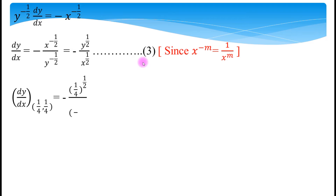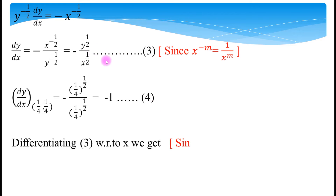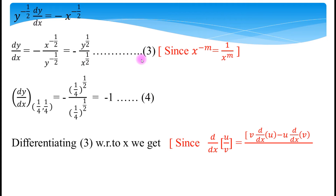The question asks for the radius of curvature at the point (1/4, 1/4). Now find dy/dx at that point by substituting x = 1/4 and y = 1/4 into equation number 3. The numerator and denominator terms cancel, giving dy/dx = -1 at the point (1/4, 1/4). Let us call this equation number 4.